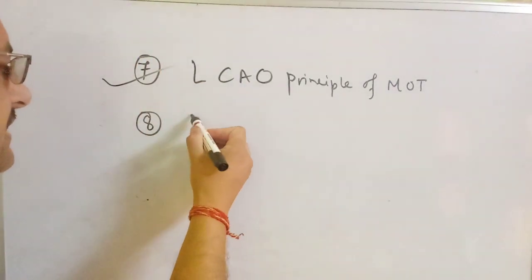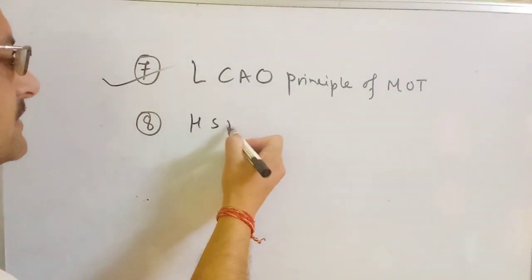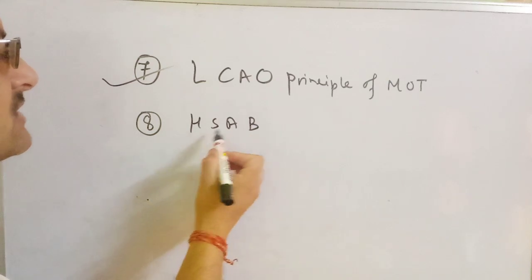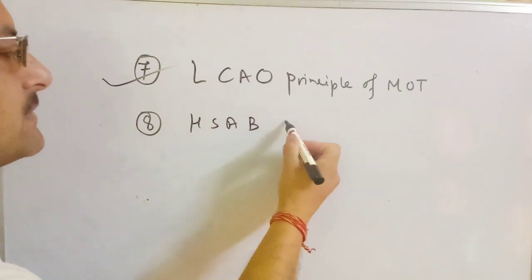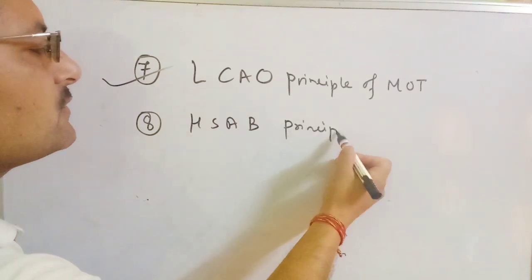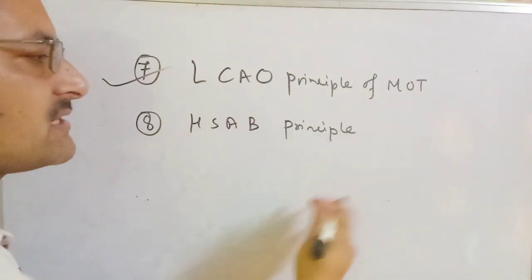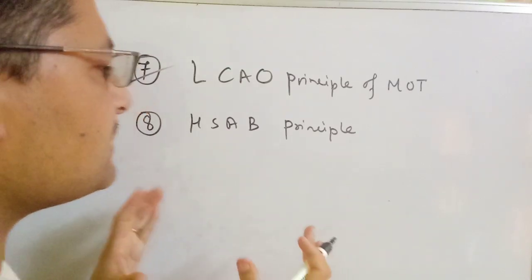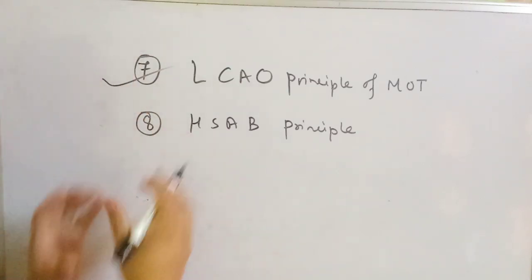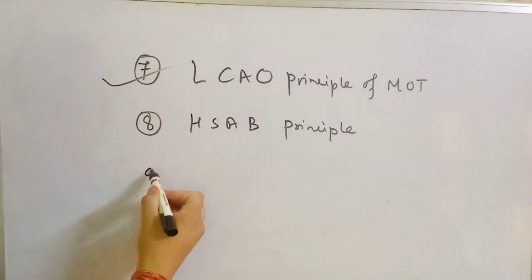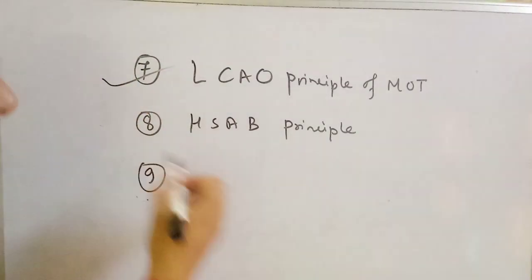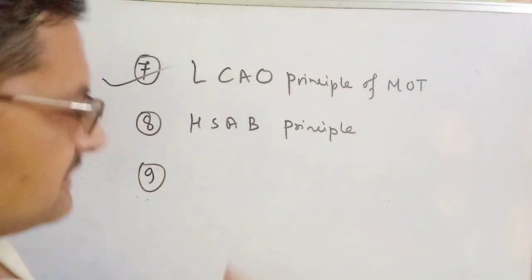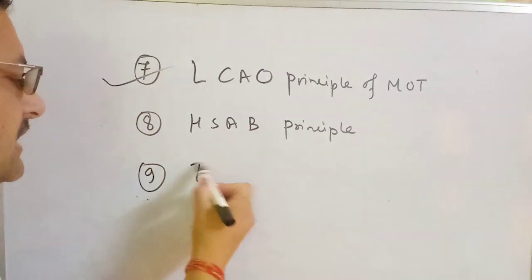Number 8 is the HSAB principle — Hard and Soft Acids and Bases principle. The next chapter is the second chapter.